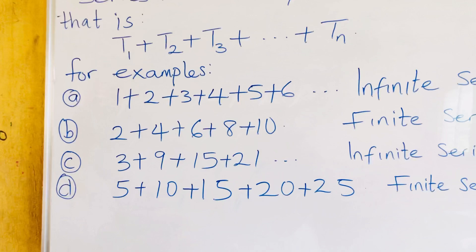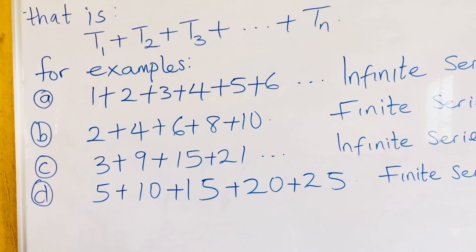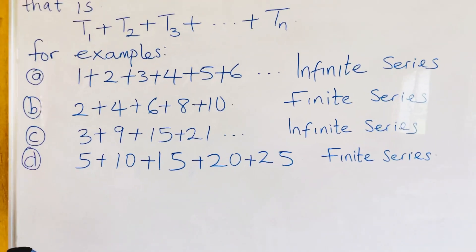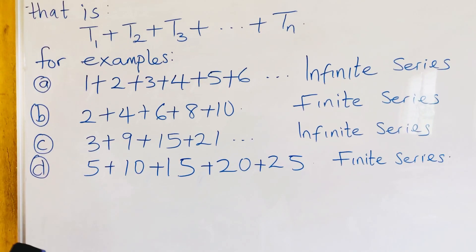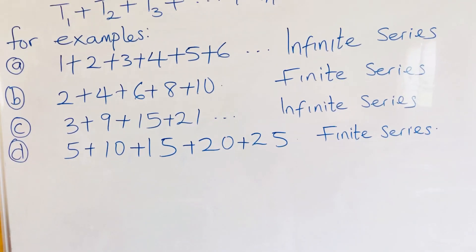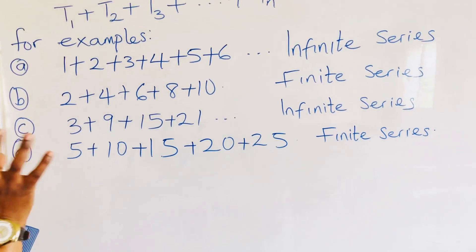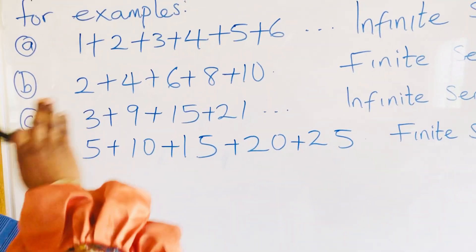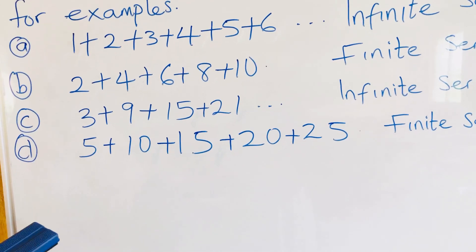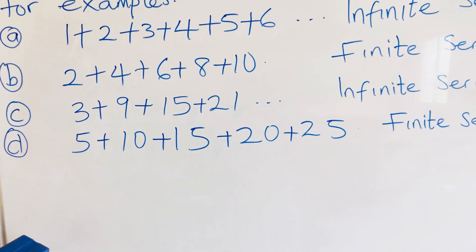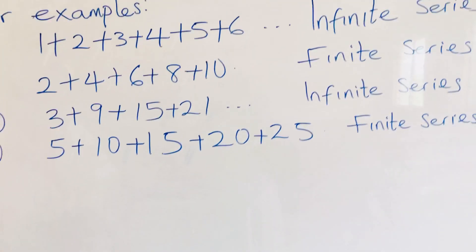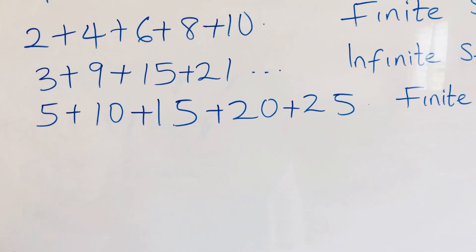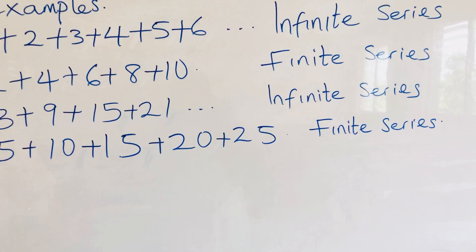For example, 1 plus 2 plus 3 plus 4 plus 5 plus 6 and so forth is an infinite series. B: 2 plus 4 plus 6 plus 8 plus 10 is a finite series — that is, it has an end and does not go beyond. 3 plus 9 plus 15 plus 21 and so on is also an infinite series. 5 plus 10 plus 15 plus 20 plus 25 is a finite series.